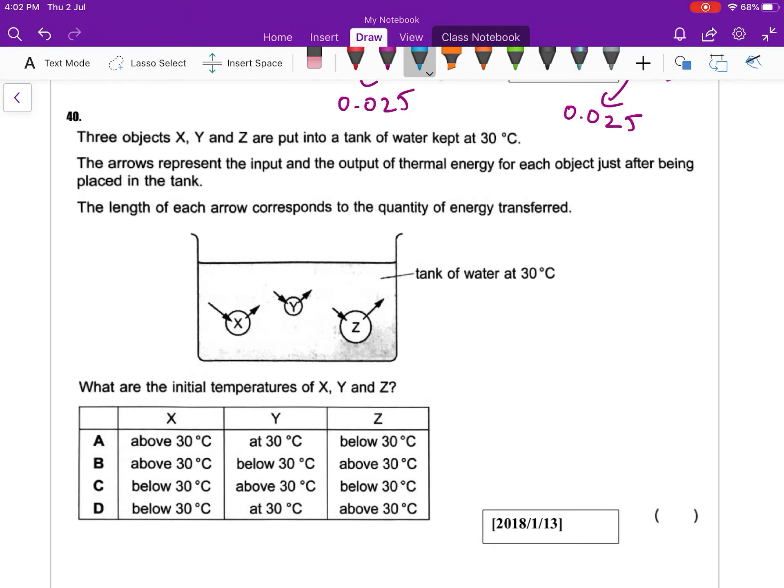Okay, question 40, 201, quite an interesting question. Three objects X, Y, and Z are put into a tank of water kept at 30 degrees Celsius. The arrows represent the input and output of thermal energy for each object just after being placed in the tank.